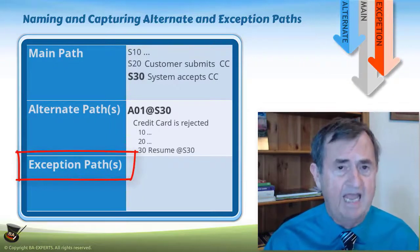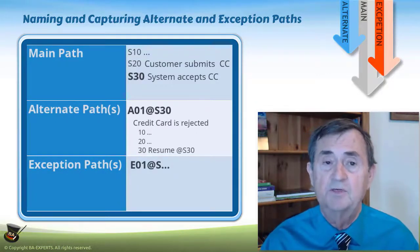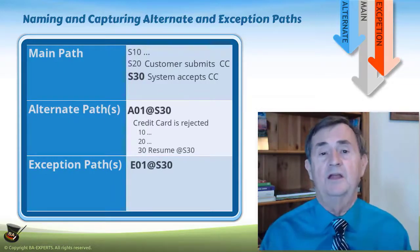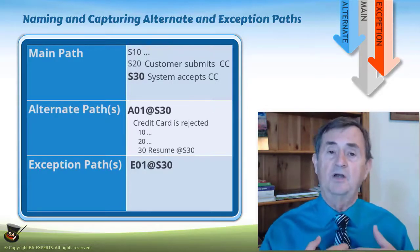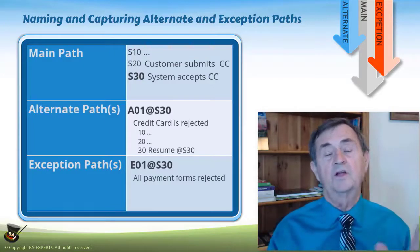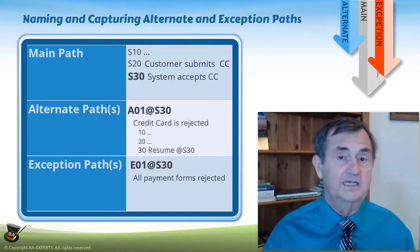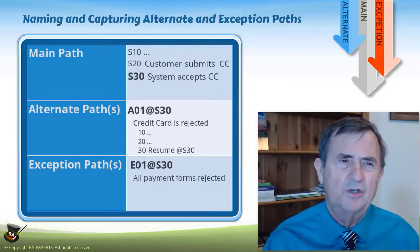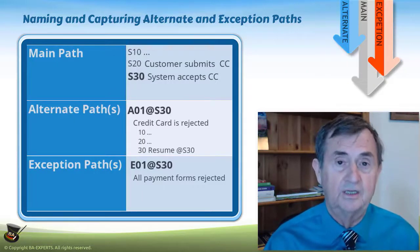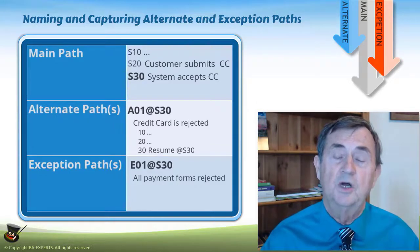If dealing with an exception path as opposed to an alternate path, the naming conventions are very similar. It's going to be E01@wherever in the flow this situation was identified, along with what the situation is. For example, at S30, where a customer is submitting a credit card but has no new credit cards to enter, I might define E01@S30 — all payment forms rejected. The at convention is essentially a precondition for that alternate or exception path, and it also tells you where in the flow it is recognized.